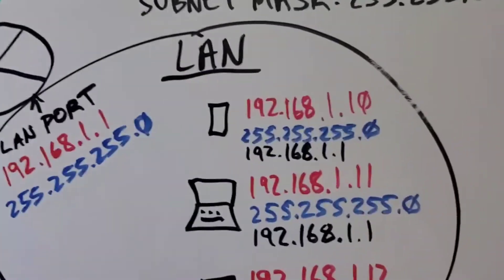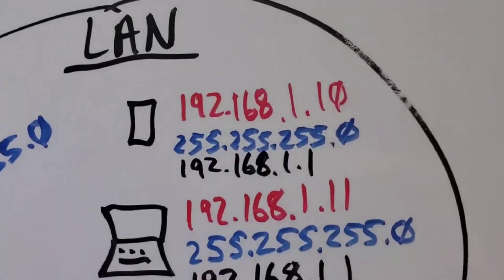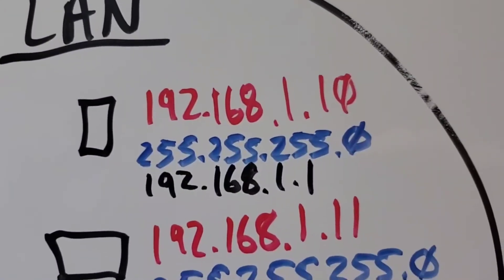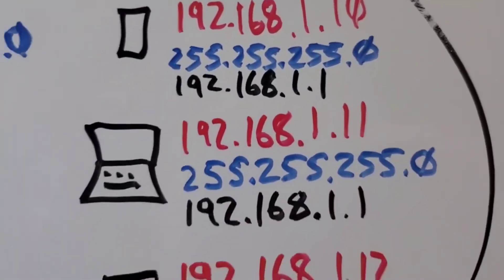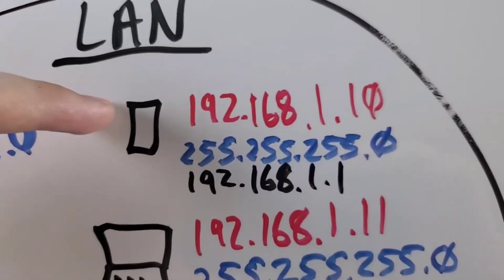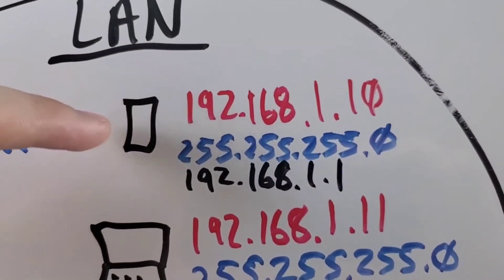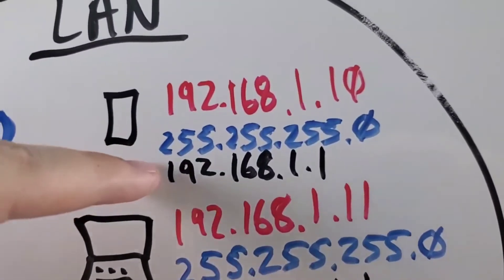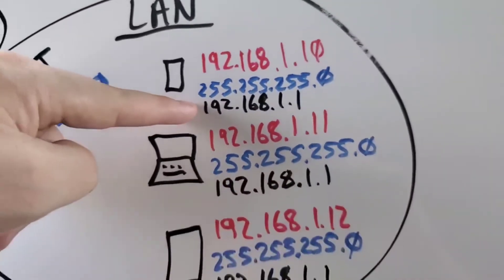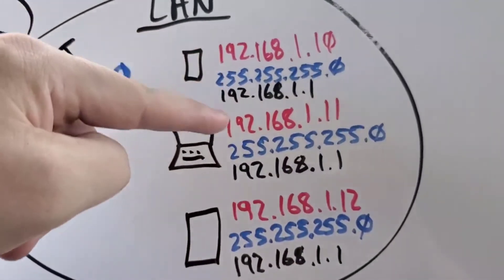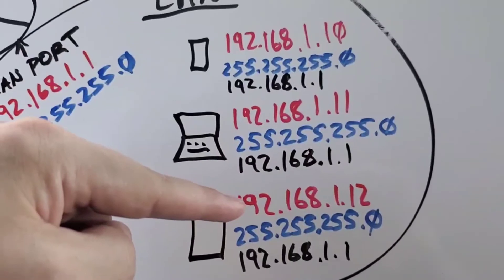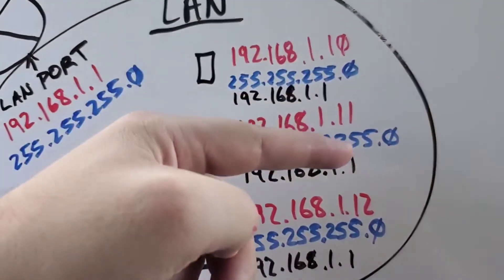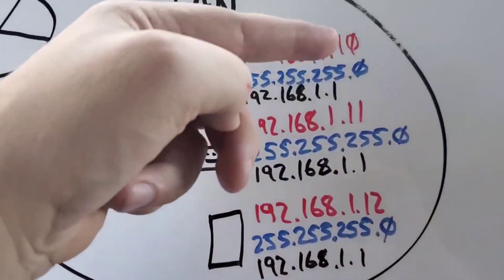To go through another example — I've added the default gateway to all these settings. Remember at the beginning, every device will have three settings: the IP address, which is the red one; the subnet mask, which is the blue one; and the default gateway, which is the black one. You'll notice the IP addresses on every device are within the network 192.168.1, and they're all unique — the last octet is unique in every single one of them.